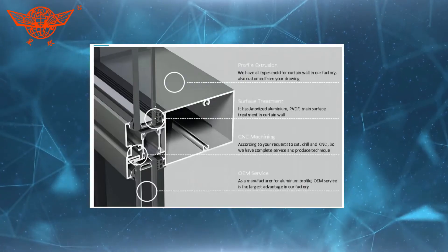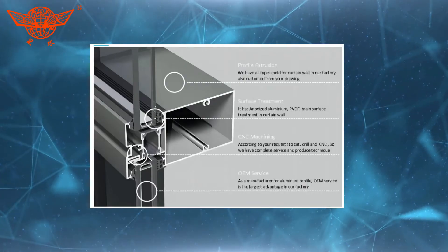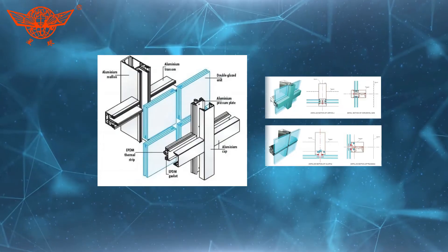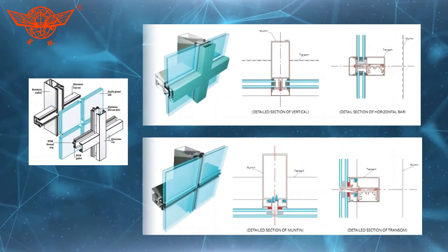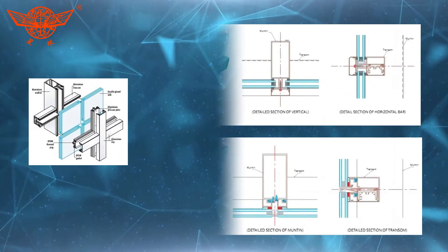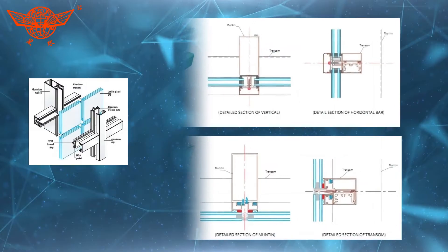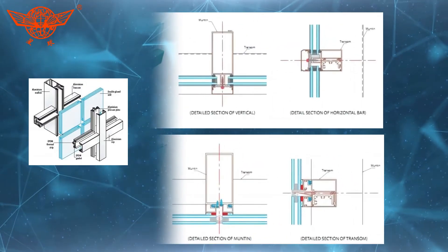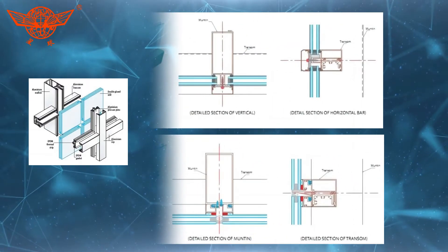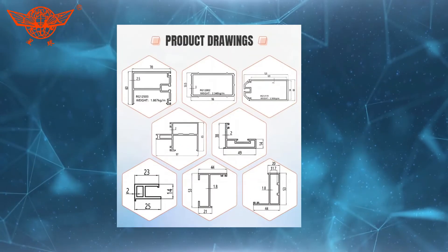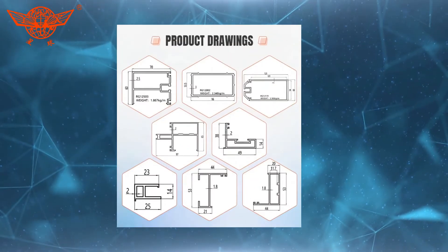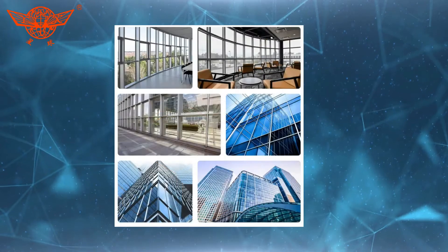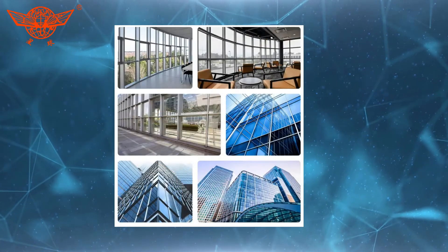And let's not forget about the aesthetics. Aluminum curtain wall profiles help to enhance the visual impact of a building, providing clean lines, stylish finishes, and contemporary design. The versatility of aluminum allows for the creation of intricate patterns, custom shapes, and innovative architectural features, allowing architects to realize their creative visions.